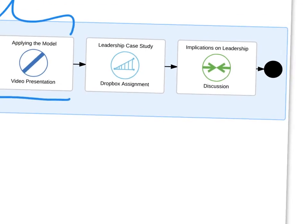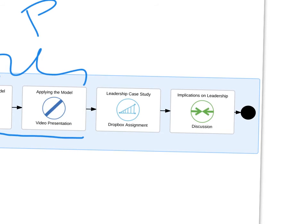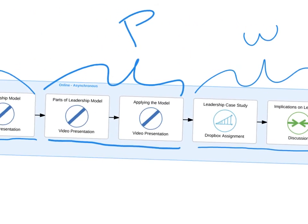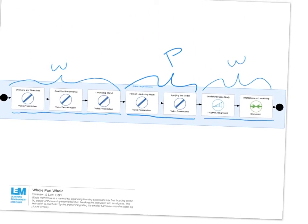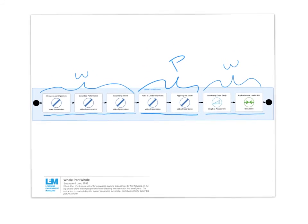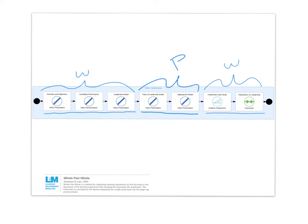Zooming into the final whole part, a leadership case study and implications on leadership in a discussion format form the final whole. Zooming out, we see a clear pattern: whole, then part, then whole. This sequence is organized so the learner moves through that series while interacting with the various elements within the learning environment.